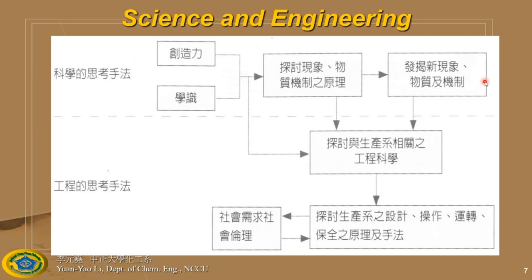What engineers do is take that new knowledge or new materials to make something that works for the world — something good for human beings, something you can manufacture as a product. Once you make a product that is good for society, you need to think about how to scale it up to mass production — from one product to thousands and thousands of products. That's the engineering way of thinking.